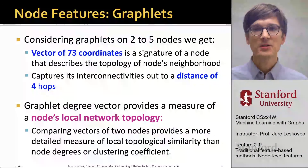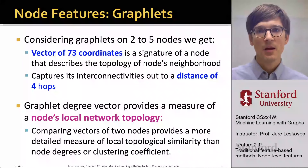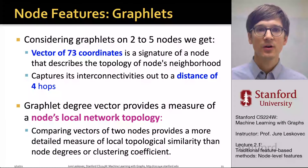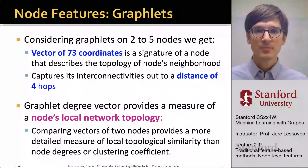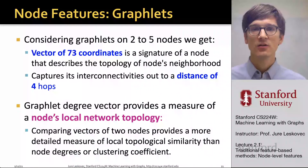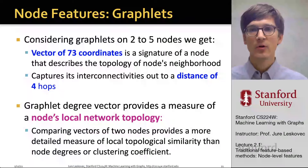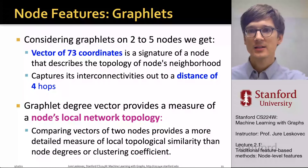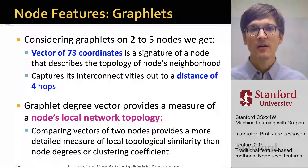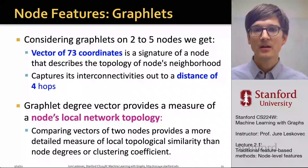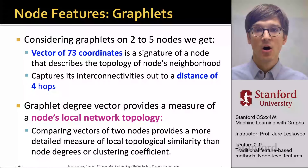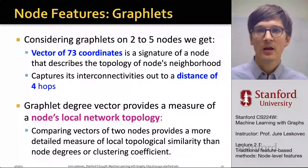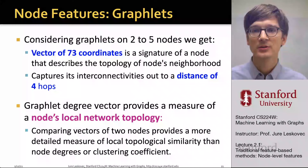Considering graphlets from two to five nodes, we can describe every node in the network with a 73-dimensional vector. This is essentially a signature of a node that describes the topology of its neighborhood, capturing its interconnections all the way up to a distance of four hops — because a chain of four edges has five nodes. The graphlet degree vector provides a measure of a node's local network topology, and comparing vectors of two nodes provides a more detailed measure of local topological similarity than just looking at node degree or clustering coefficient.